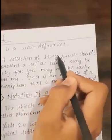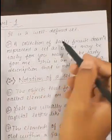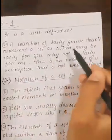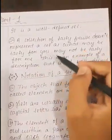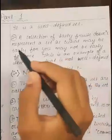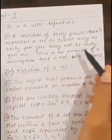A collection of tasty fruits does not represent a set as what may be tasty for you may not be tasty for me. This is an example of a description that is not well-defined.